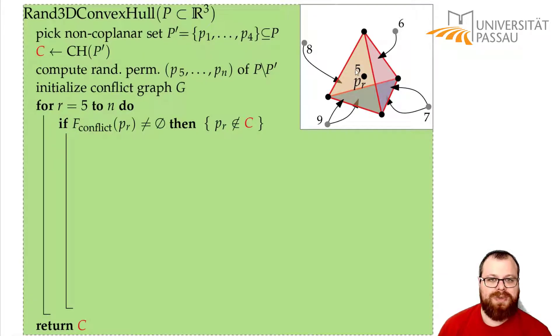So now we can assume we have a point, for example point 6 here, where there's at least one conflict. Now what do we want to do? We know that we have to destroy all the faces that we have a conflict with, all the faces that this point sees, and we have to create the new faces with the horizon.